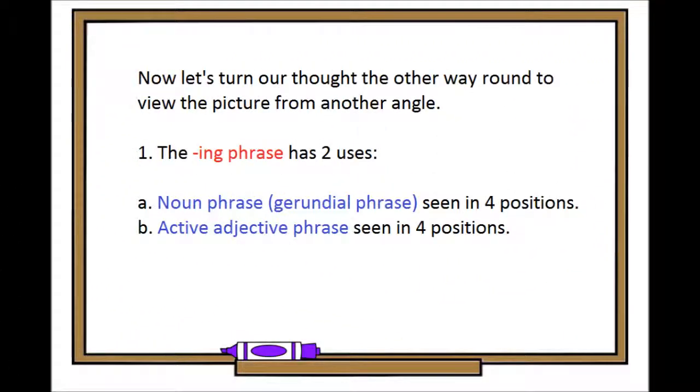Now let's turn our thought the other way around to view the picture from another angle. The -ing phrase has two uses: noun phrase (gerundial phrase) seen in four positions, and active adjective phrase seen in four positions.